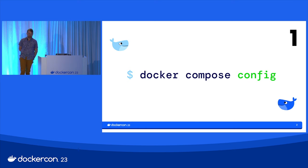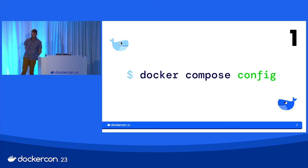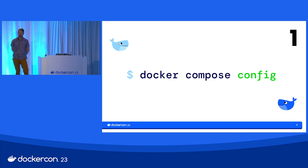So let's go ahead and get going. The first thing I want to talk about is Docker Compose Config. You might have seen this command. It will give you the fully rendered, templated version of your project in YAML by default. You can also get it in JSON, which is useful if you're integrating with another system or want to use JQ on the command line to extract something.